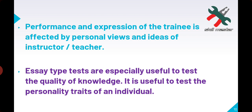Performance and expression of the trainee is affected by the personal views and ideas of the instructor or teacher. What a student writes depends on the instructor evaluating it. If a student writes exactly from the textbook, some instructors may be impressed and give good marks, while others may suspect cheating. It depends on the instructor's personal perspective and how they view the student's performance.